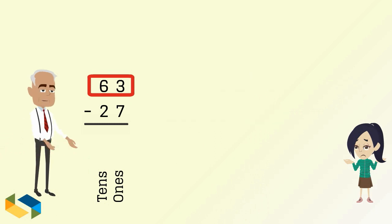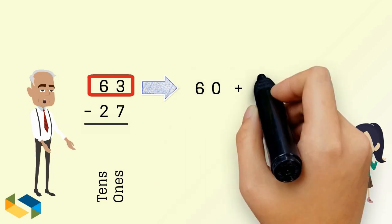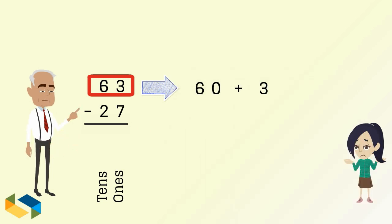Let me explain. The number at the top is 63, which is 60 plus 3, separating the ones from the tens.